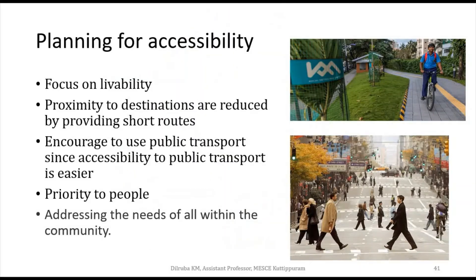Whereas if we plan for accessibility, it focuses on people and prioritizes people. From an accessibility point of view, we encourage people to walk and use public transport, so they don't have to depend on their own car to reach their destination. If you have a very good public transportation facility that can take you from your doorstep to your destination, why would you use a car? Planning for accessibility addresses the needs of all within the community.